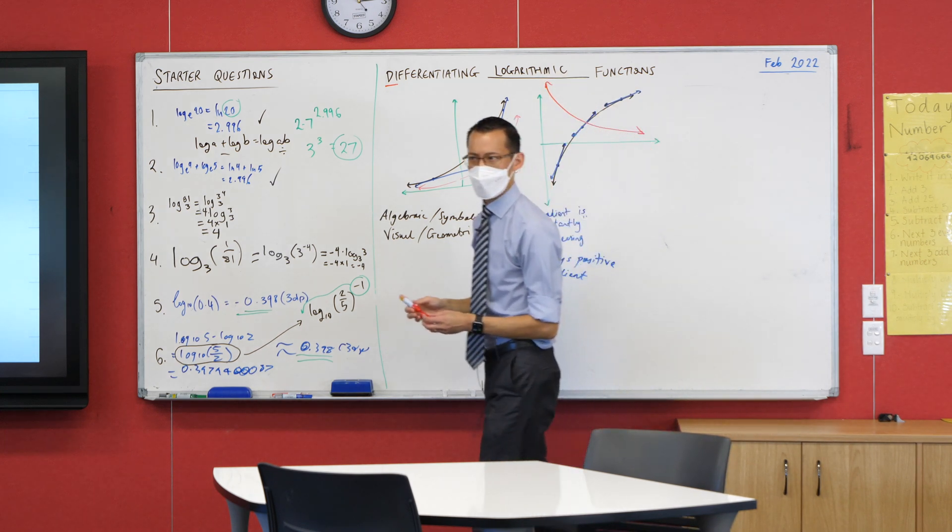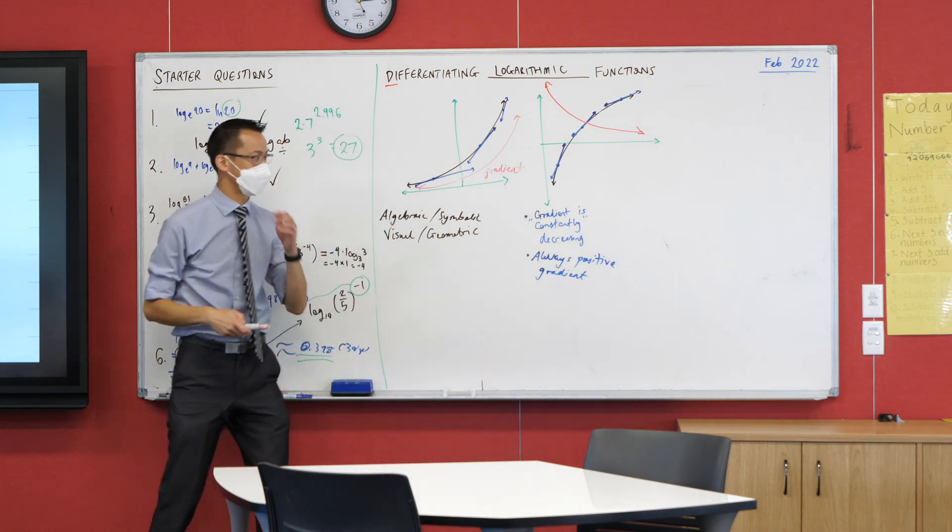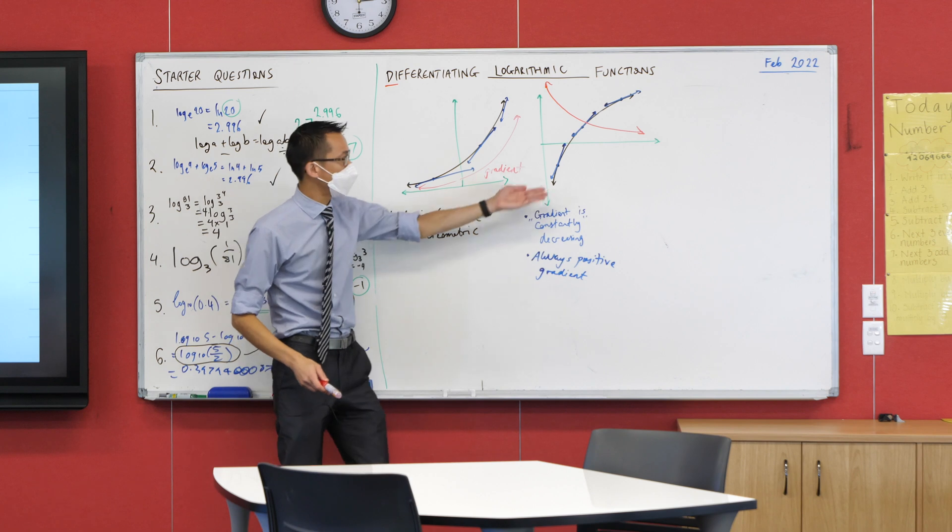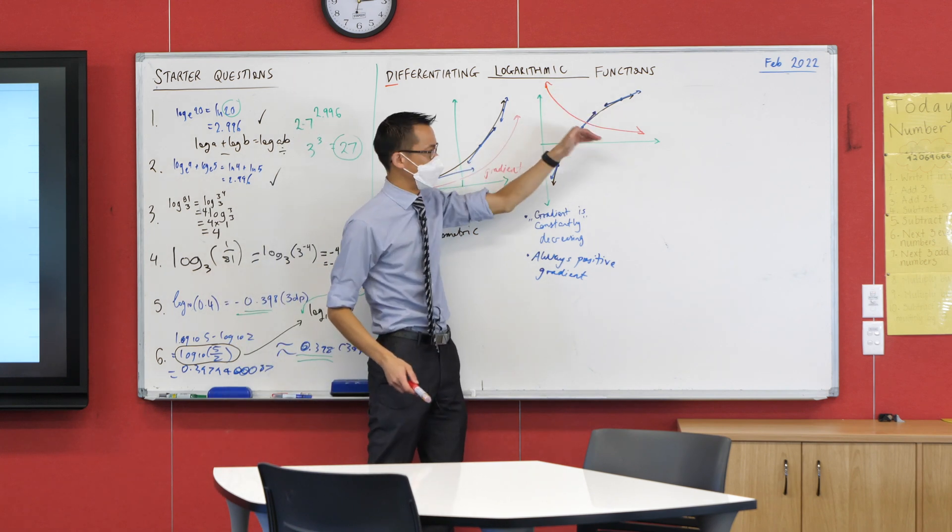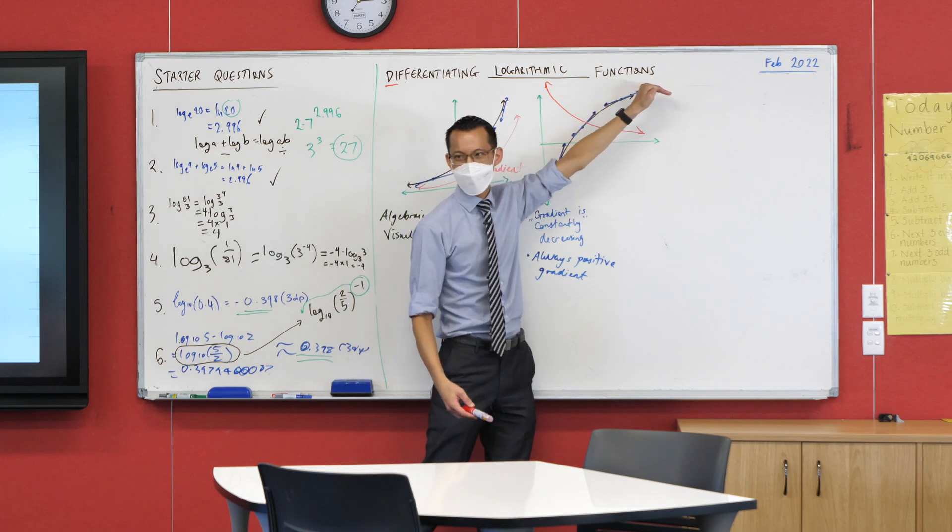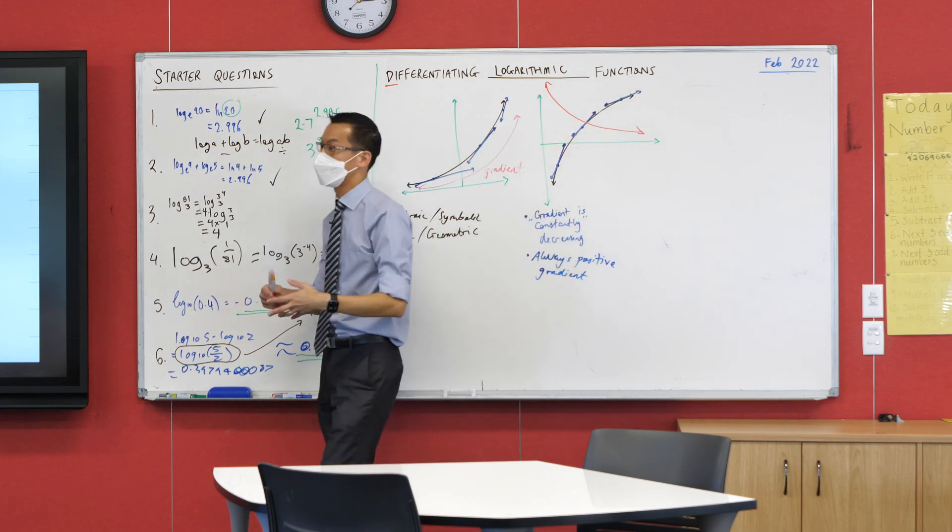Can you see how that red curve fits both of my qualities? Number one, it's always positive. You see, it stays up above, right? I mean, it gets pretty low, but that corresponds to the fact that this thing gets pretty flat, right? Flat means low gradient.